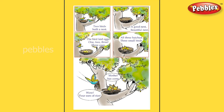Two birds built a nest — a good, beautiful nest. The bird laid eggs: one, two, three — three eggs.